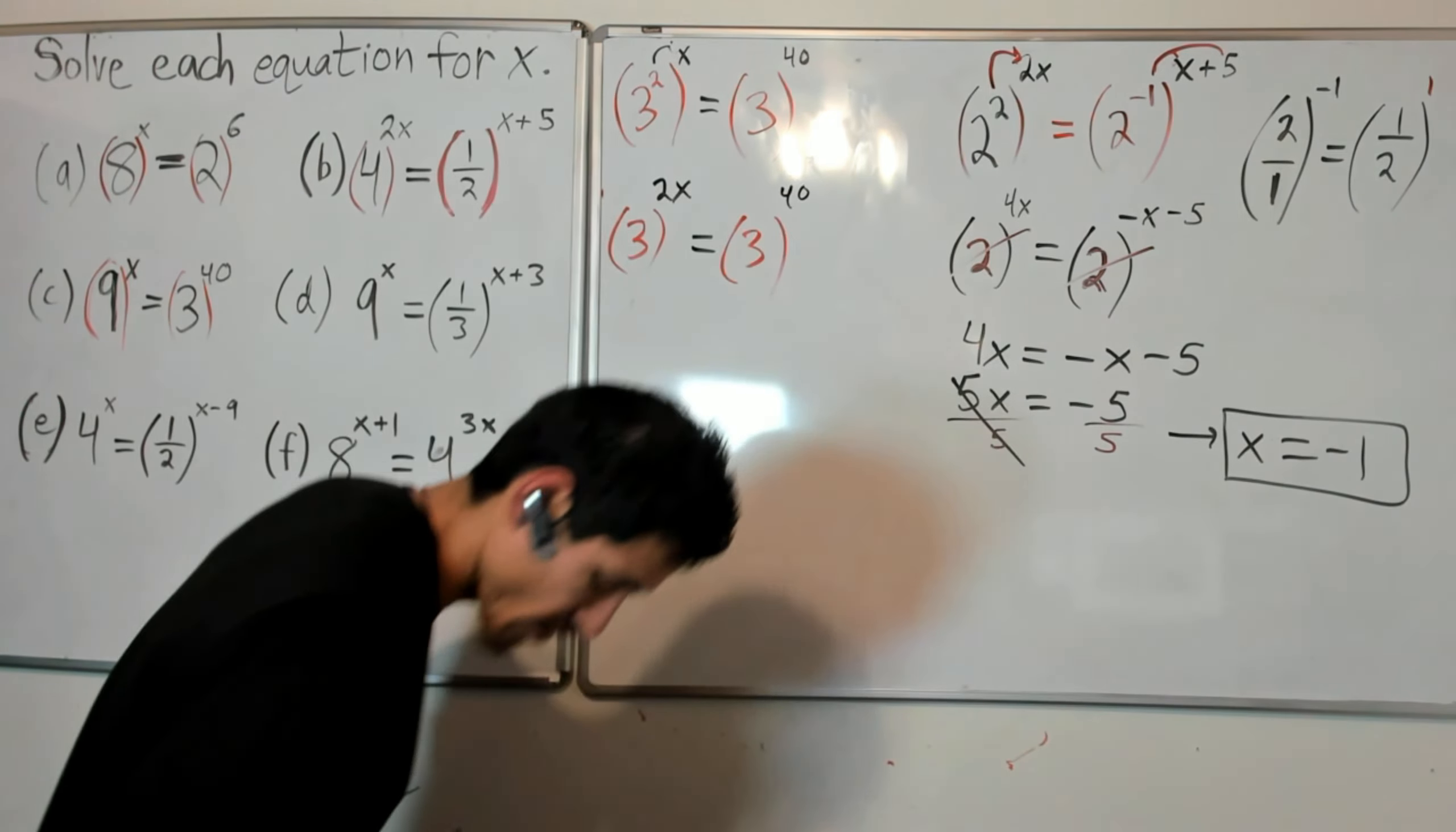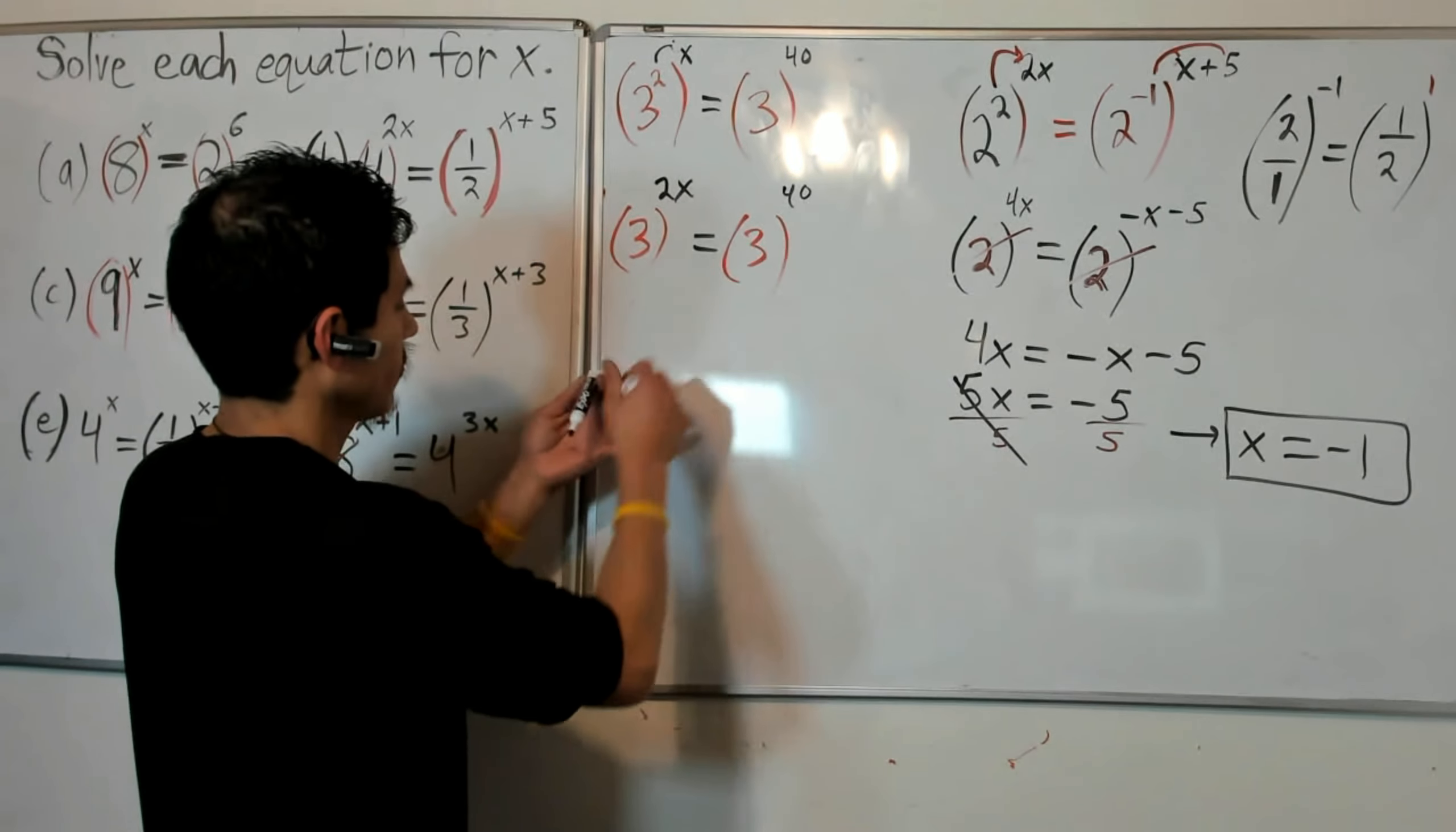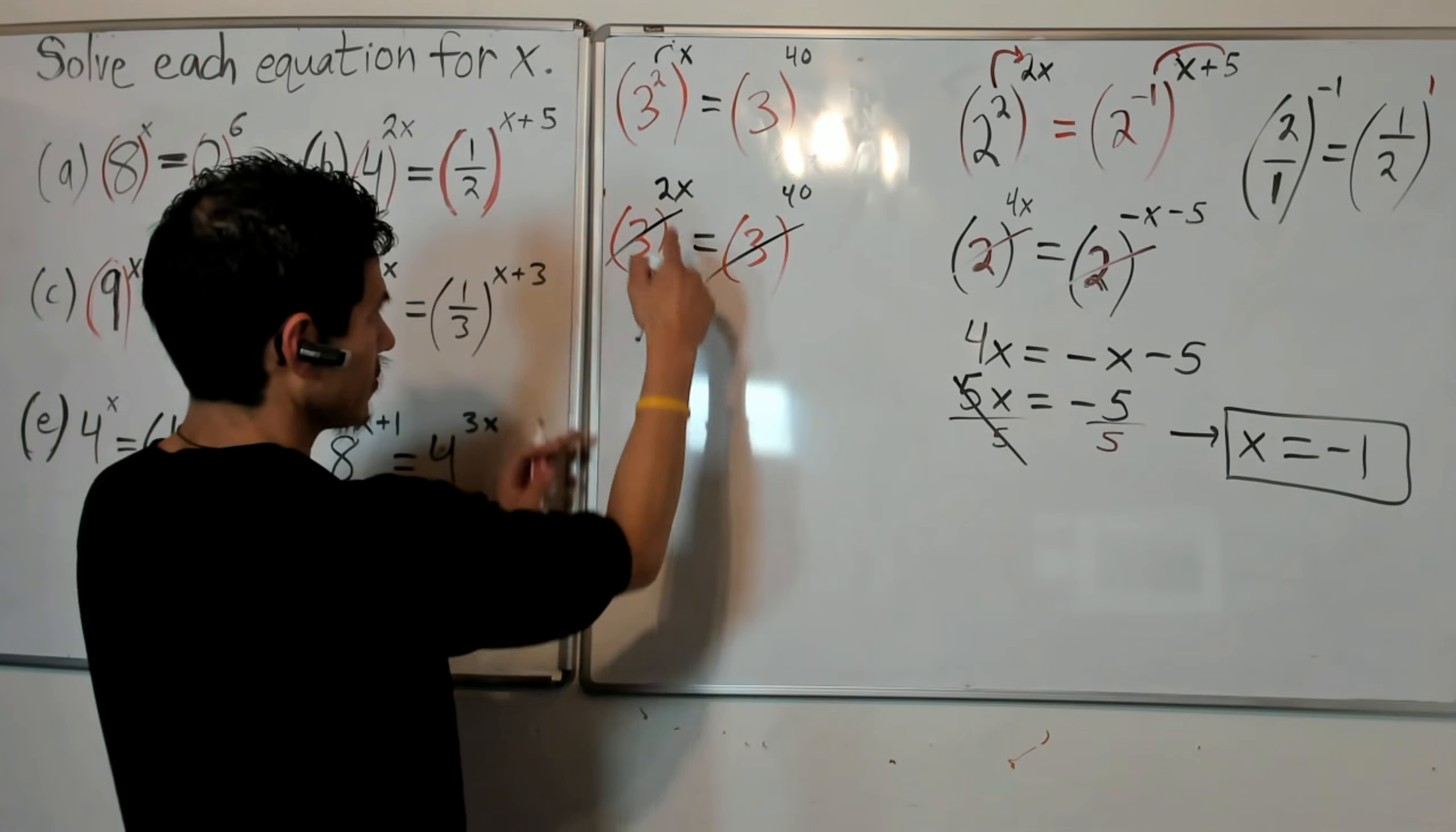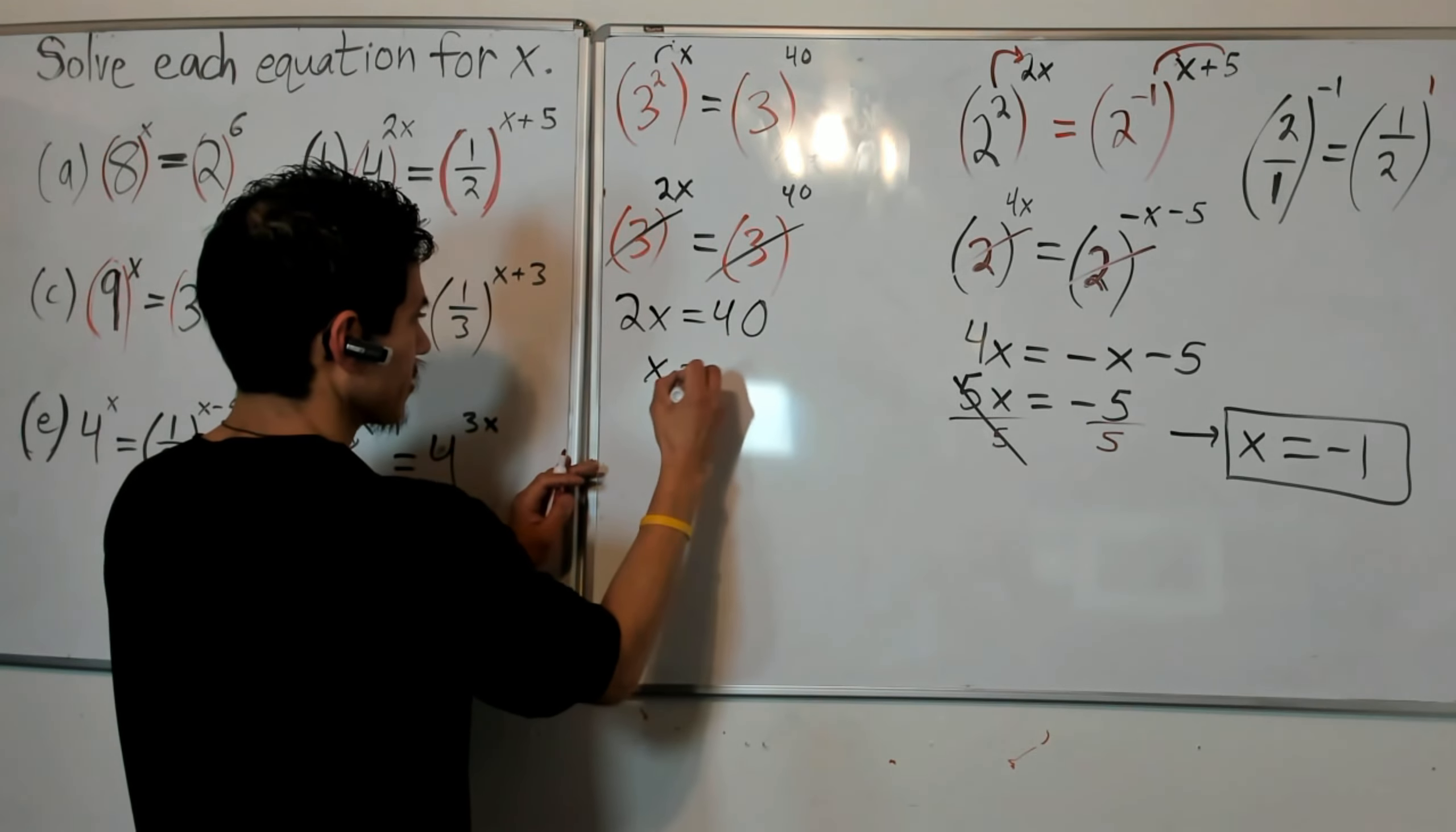Bases here go away because they're isolated, they're the same. So I just have 2x equals 40, and x equals 20.